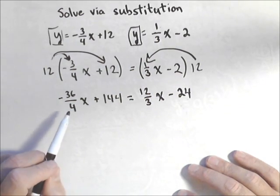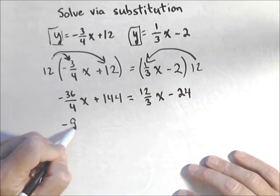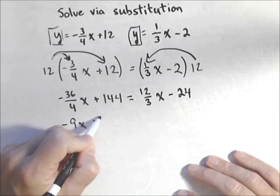Now I got some reducing I can do. This is just negative 9x plus 144.